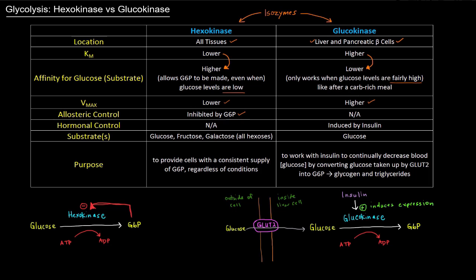That's not the case with glucokinase — there's no allosteric control. However, there is hormonal control. There's no hormonal control of hexokinase, but glucokinase is associated with and induced by insulin. 'Induced' refers to transcription: insulin induces transcription of the glucokinase gene, causing more glucokinase to be expressed. So when insulin is released, more glucokinase is made and you'll have more glucokinase activity.